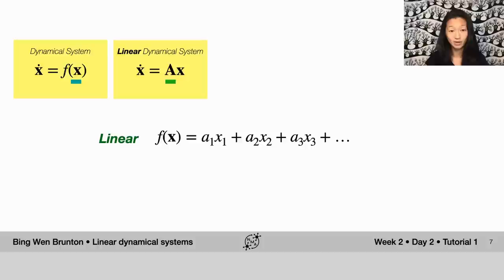Some number times x1, the first variable. Some number times the second state variable, x2. A different number, potentially, times x3, the third variable, and so on.